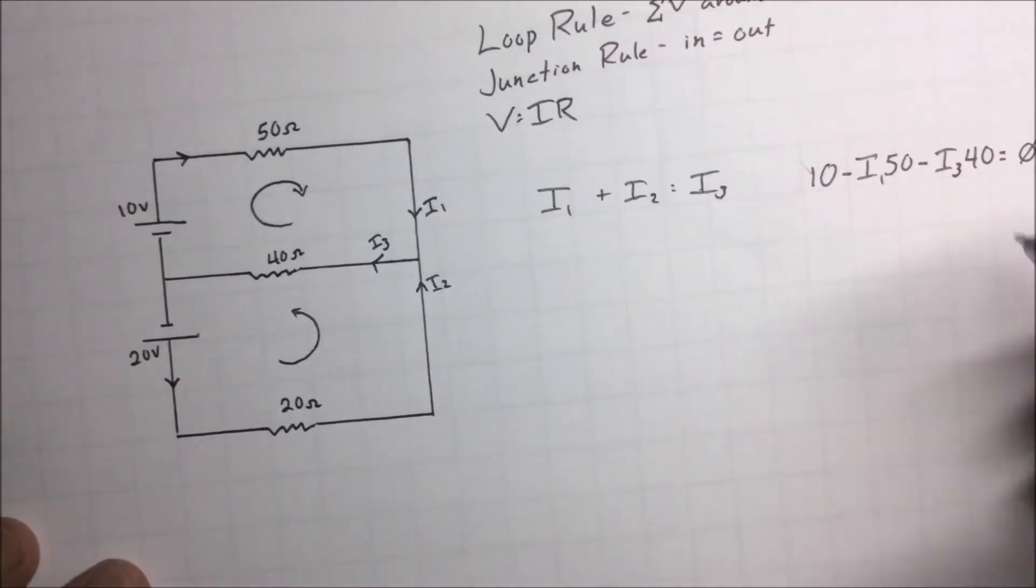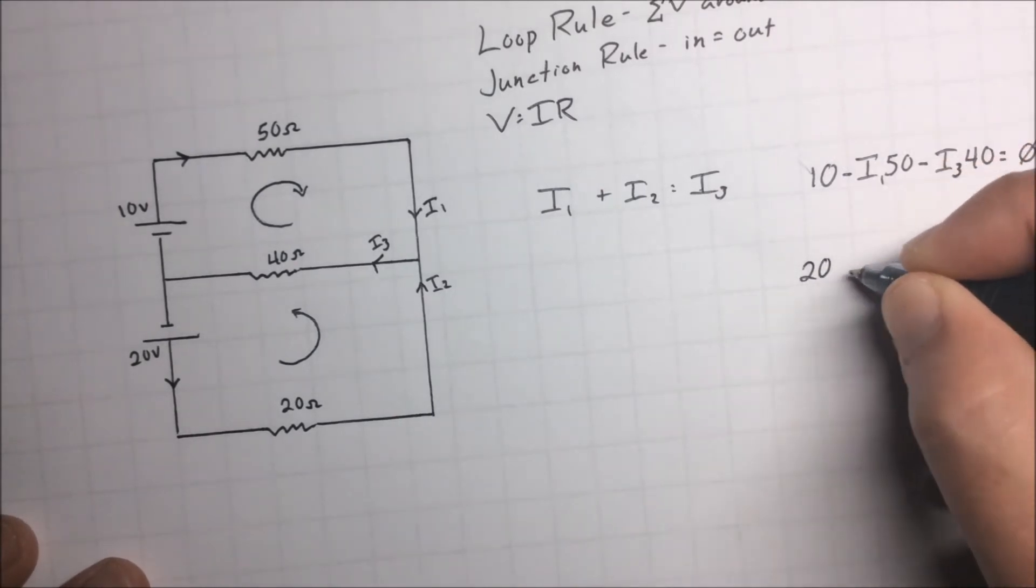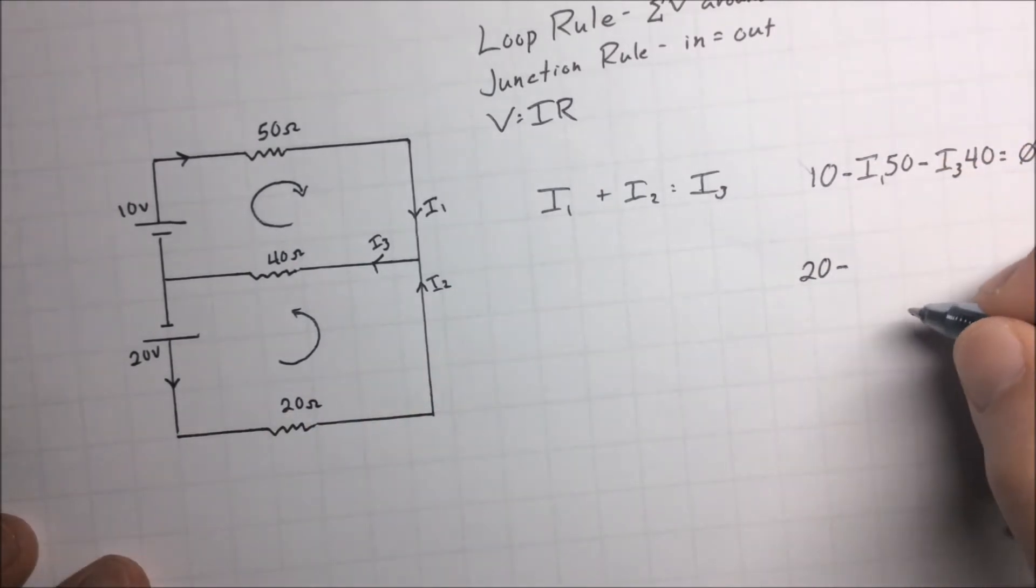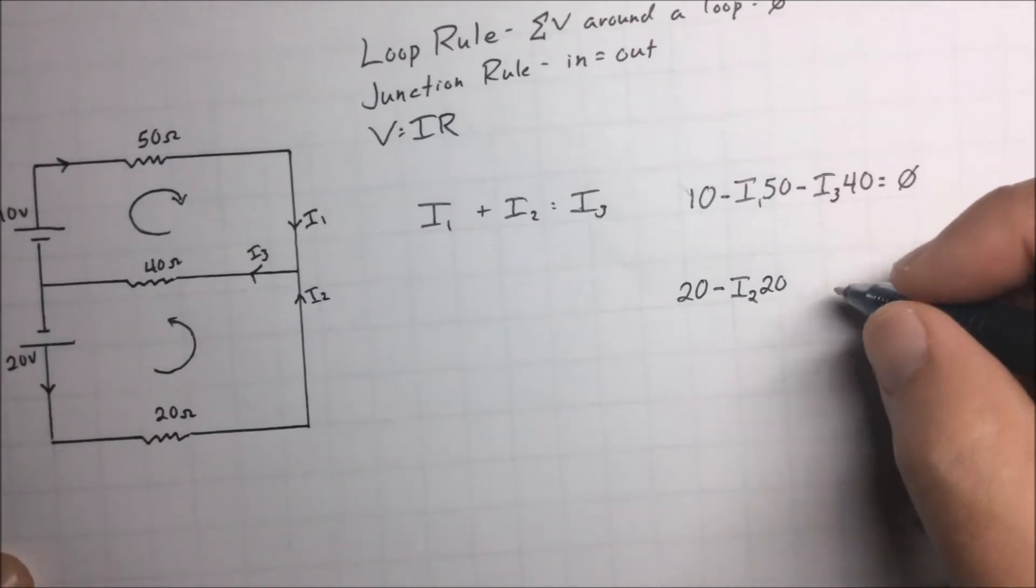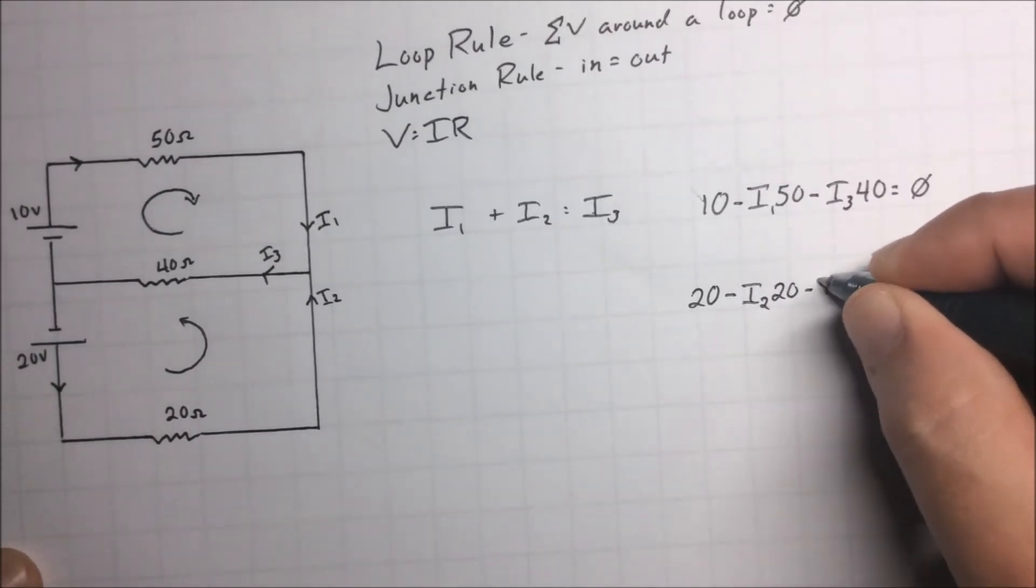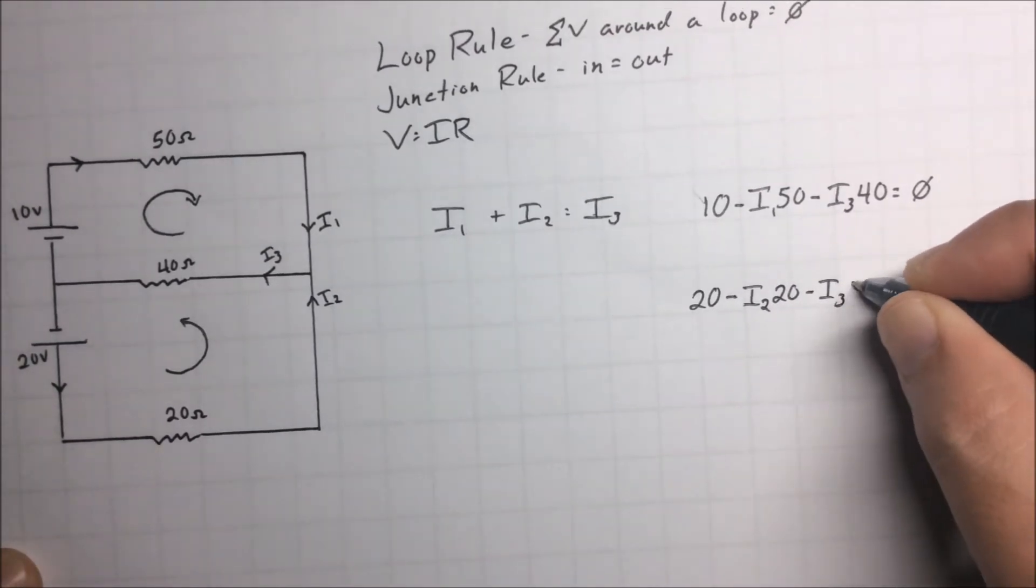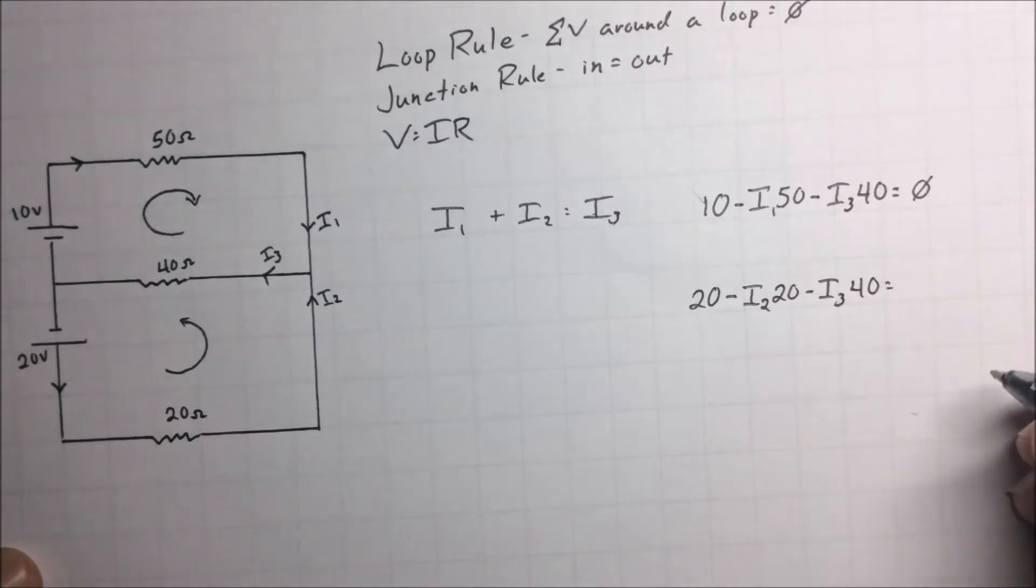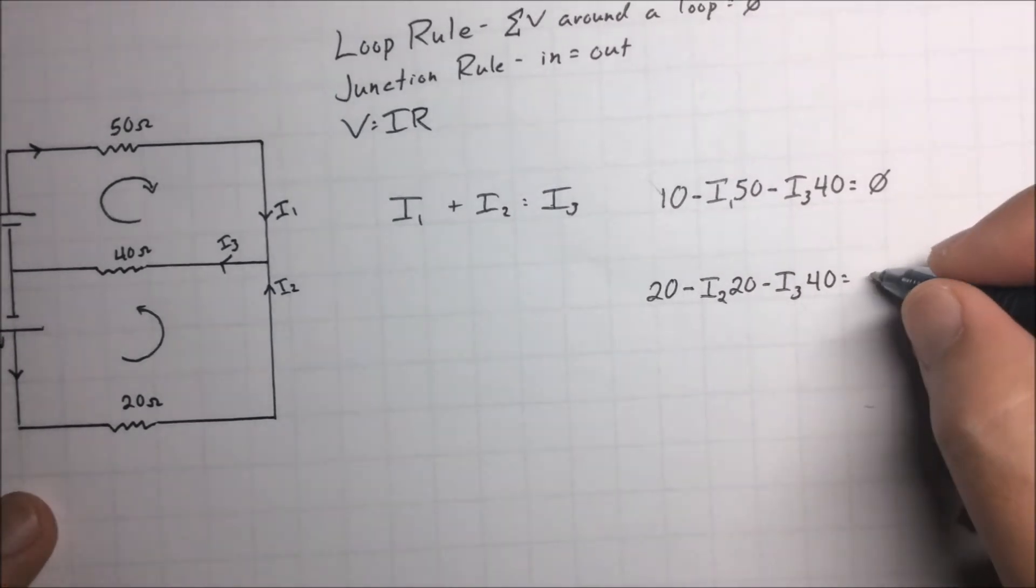Loop two would say we started off with a 20 volt battery. We're going to run through a resistance of 20 ohms but that's going to be I2 and that's going to be a 20 right there. And we're going to go through and also have a negative I3 and 40 and that's going to finish us off for that bottom loop and that should be equal to zero.